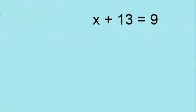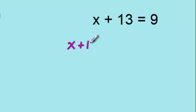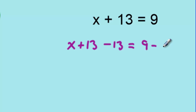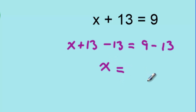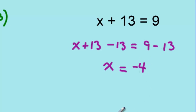For our last example, x plus 3 equals 9. The opposite operation to adding 13 is subtracting 13. I'm going to subtract 13 from the left side, but also subtract 13 from the right side. The 13's on the left side will cancel, leaving me just with x. The right side, 9 subtract 13 equals negative 4. So we're left with x equals negative 4.